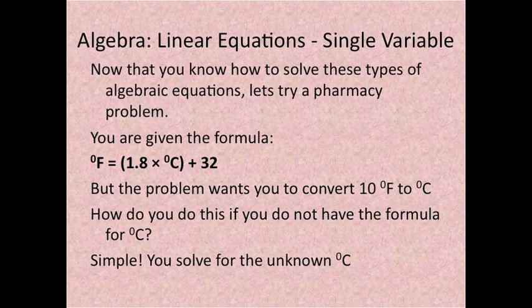Now that you know how to solve these types of algebraic equations, let's try a pharmacy problem. You are given the formula: degrees Fahrenheit equals 1.8 times degrees centigrade plus 32. But the problem wants you to convert 10 degrees Fahrenheit to degrees centigrade. How do you do this if you do not have the formula for degrees centigrade? Simple. You solve for the unknown.